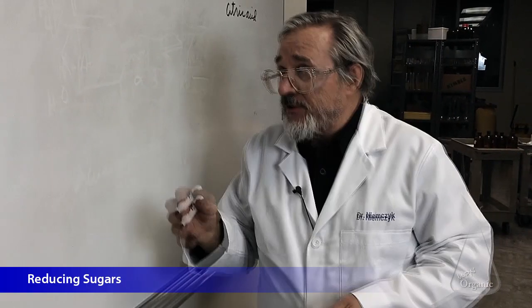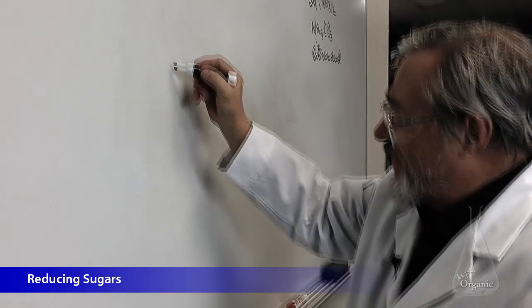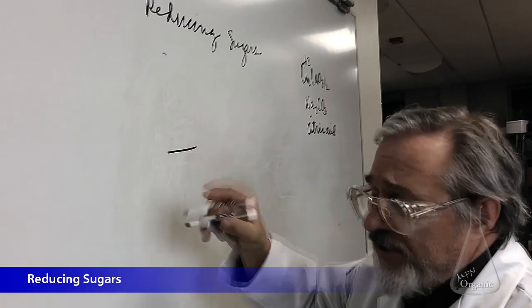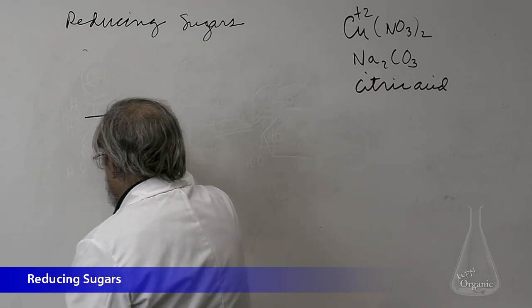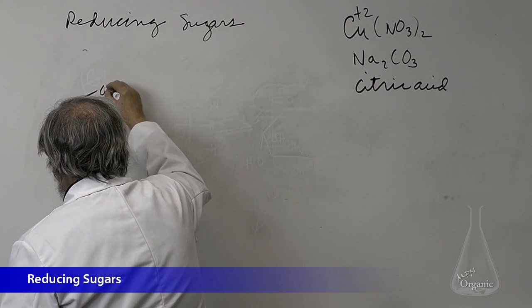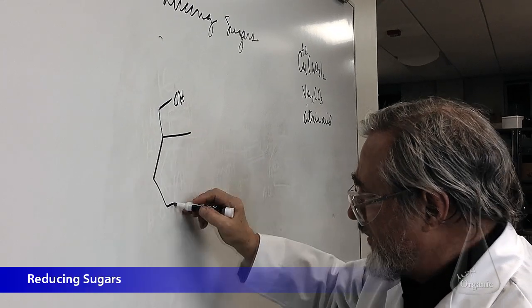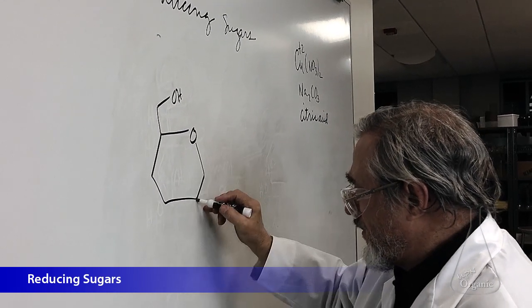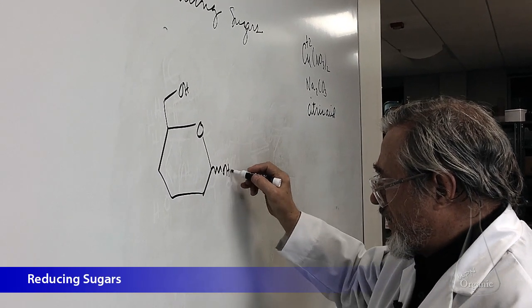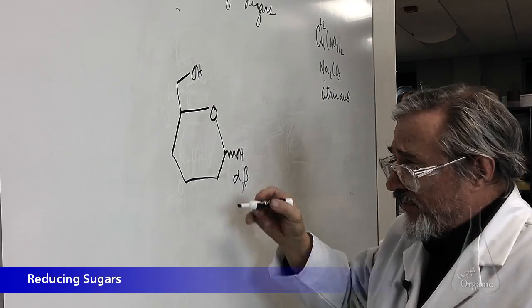Now what do we do with galactose? Let's just do the same thing. Here we have galactose, just like glucose does not exist in this Fischer projection, but in fact, exists once again as the alpha and beta anomers.